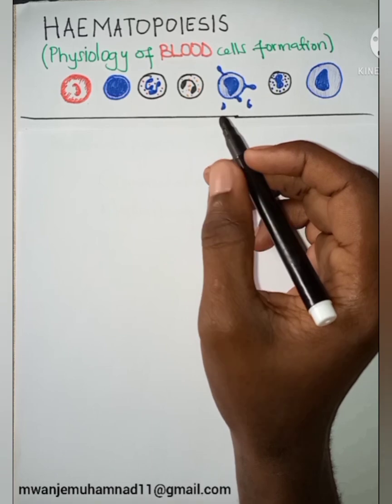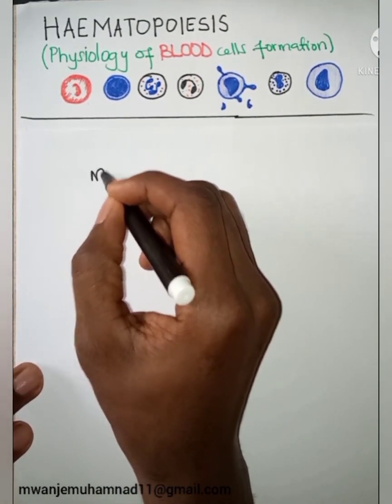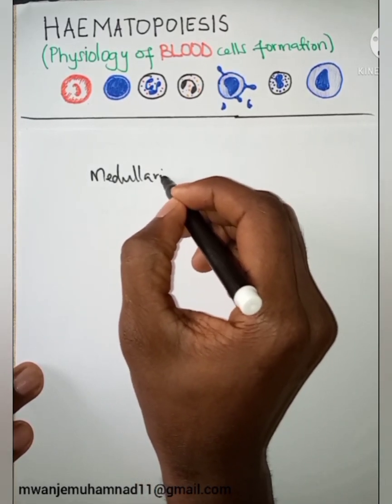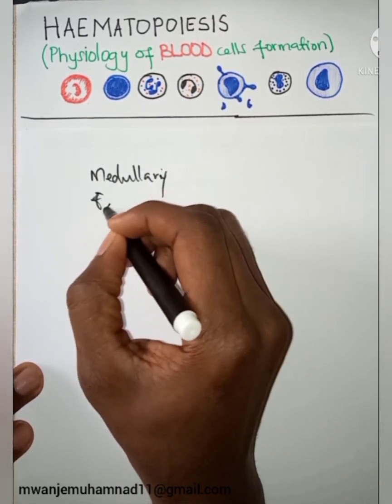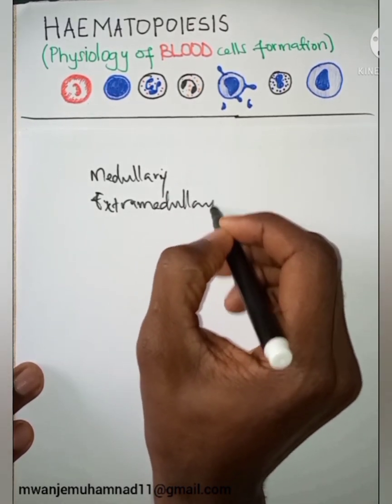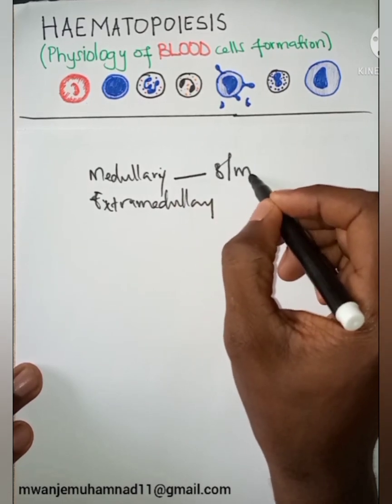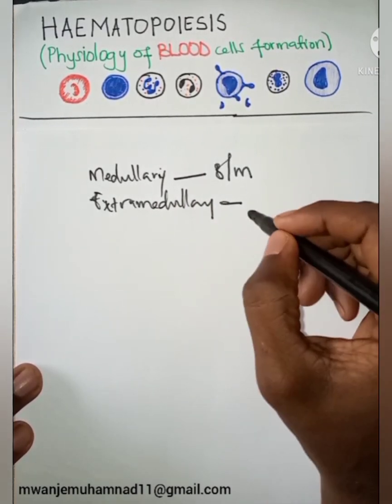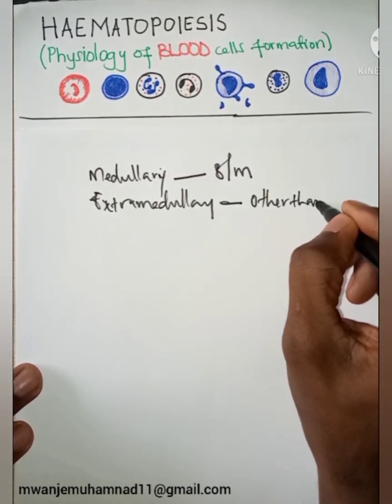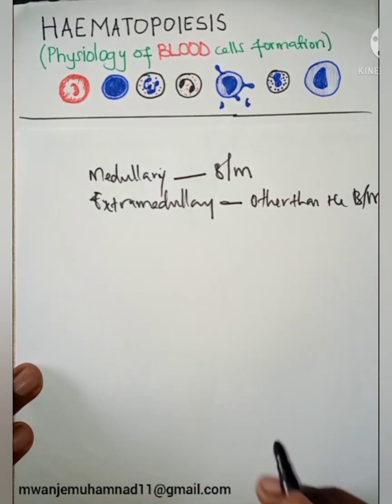Hematopoiesis is the physiological process of blood cell formation. This occurs in two major ways: medullary and extramedullary. The medullary is where this process occurs in the bone marrow, and extramedullary where it occurs in sites other than the bone marrow.